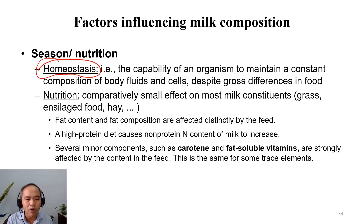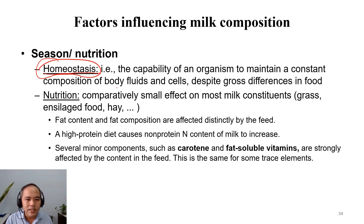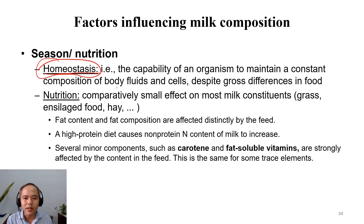Homeostasis ensures that milk can always provide nutrients to the baby. If a mother cow eats something unusual, homeostasis prevents it from harming the baby through the milk. Due to homeostasis, whatever the animal eats, the fluid in the body — including milk and blood — will maintain its composition as much as possible. But still, the diet does have some influence on the feed composition.